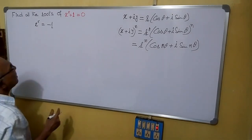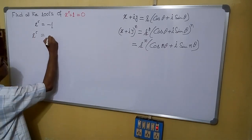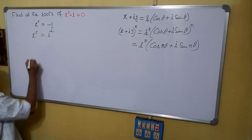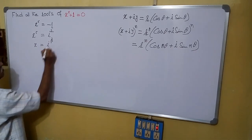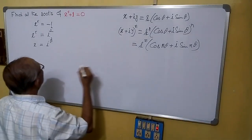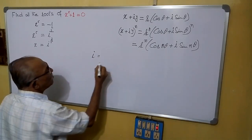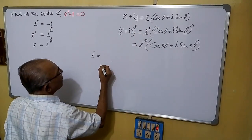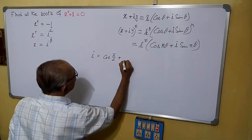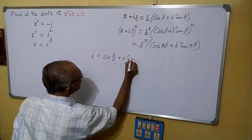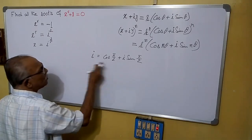Now, here we can write x to the power 5 equals to minus 1. Knowing that minus 1 equals i squared, we get x equals to i to the power 2 by 5. Now, i can be written in polar form as cos pi by 2 plus i sine pi by 2, since cos pi by 2 is 0 and sine pi by 2 is 1, giving us i.